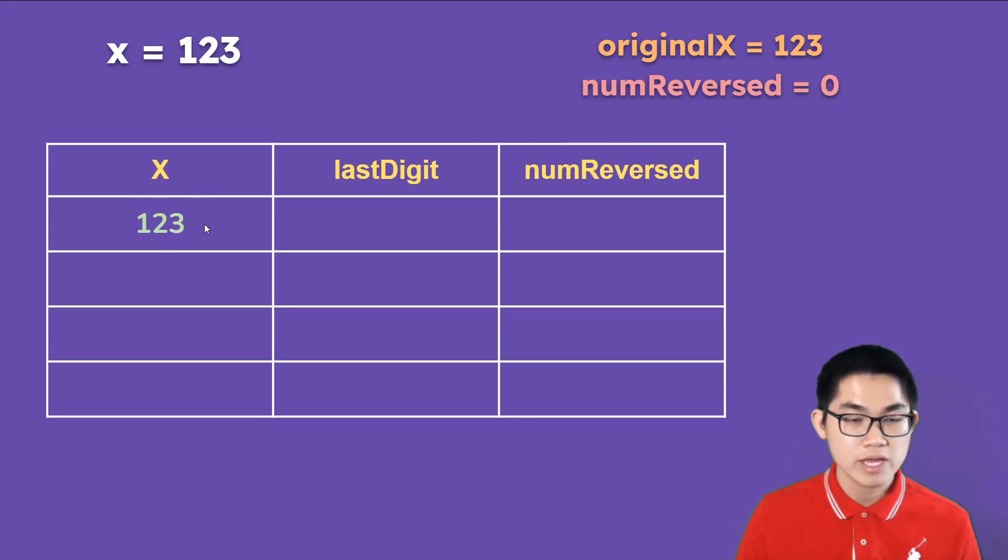Here x is 123. We want to get the last digit, which is number 3. So the formula is just modulus by 10, that's going to give you 3. As for num reverse, I'm going to show you the formula. It won't make sense right away, but once we fill up this column, it will make sense.